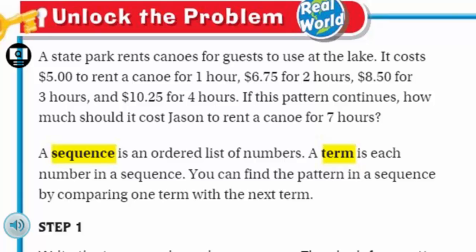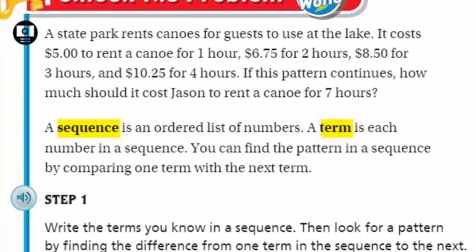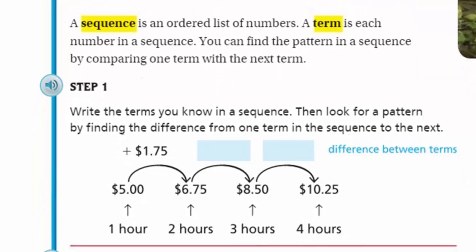Now, we have a little bit of information we need to look at. Some vocabulary. It says a sequence is an ordered list of numbers. Okay. Ordered list. They're in order. And then it says a term is each number in a sequence. Very different. So a term can be the number in that particular sequence. The whole thing is called the sequence of numbers. A term is one of those numbers in a sequence. You can find the pattern in a sequence by comparing one term with the next term.